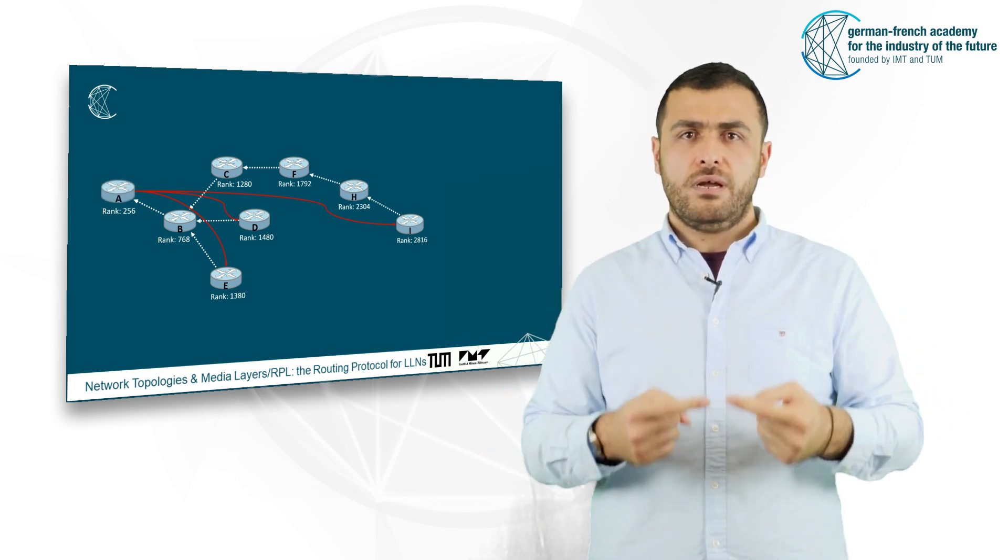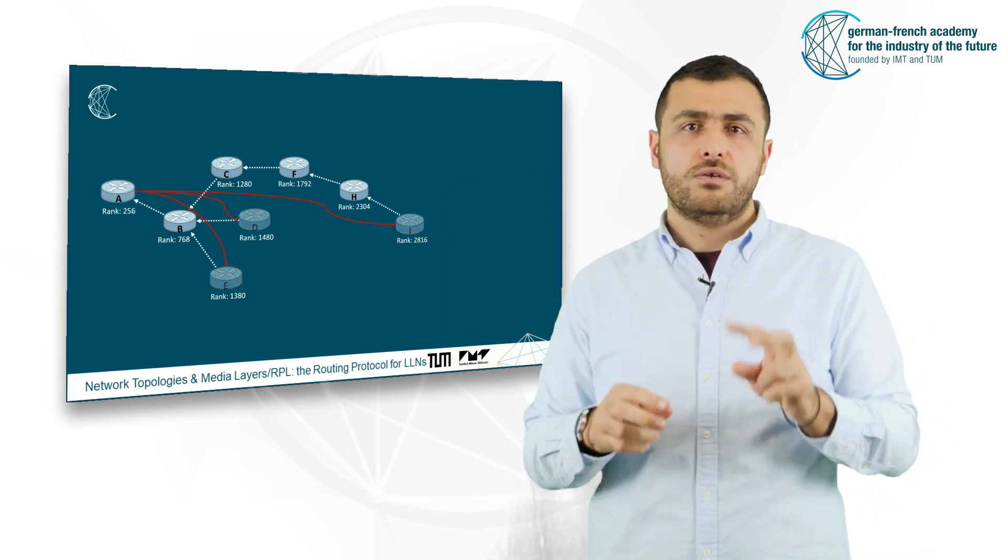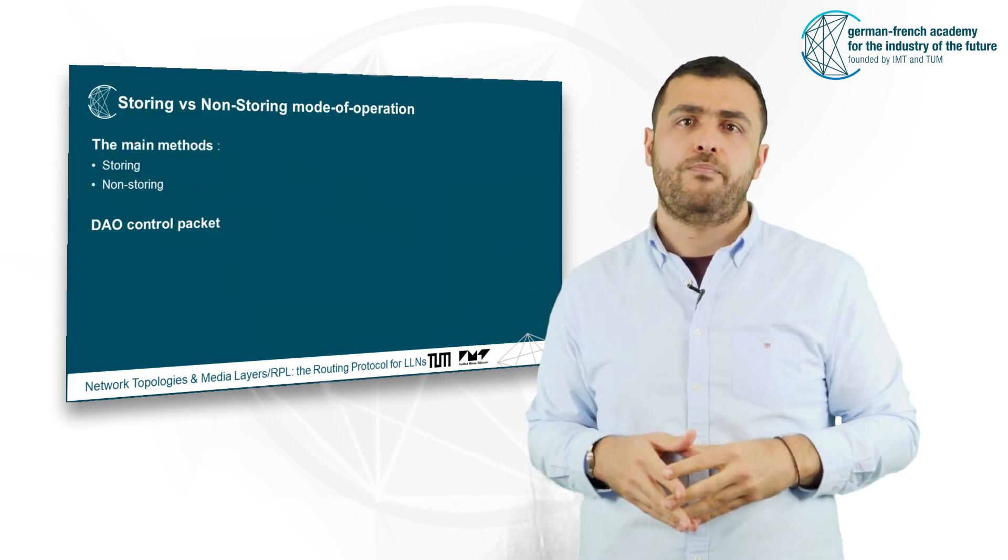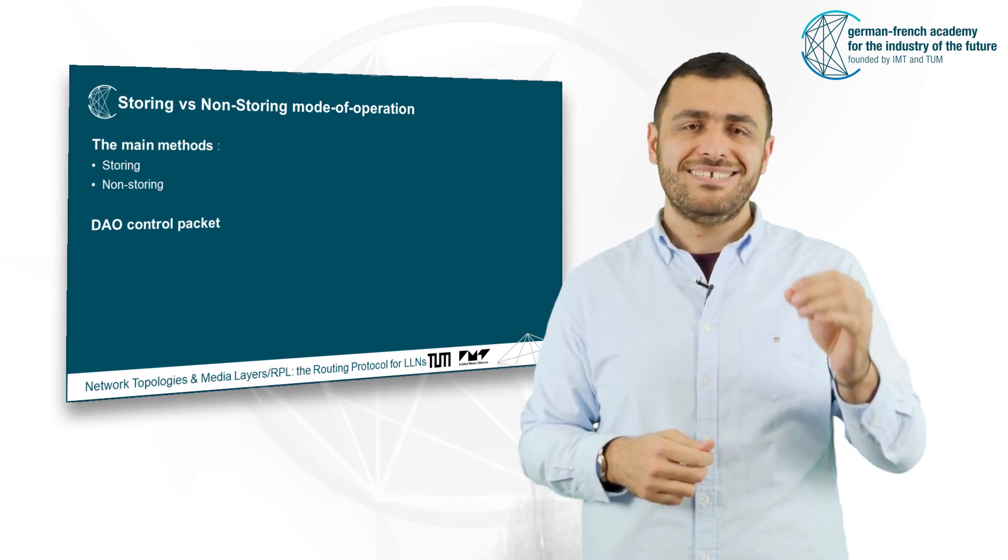For the reverse route, from the root to any non-root nodes, there are two main methods called storing and non-storing modes and the usage of another control packet, the DAO.